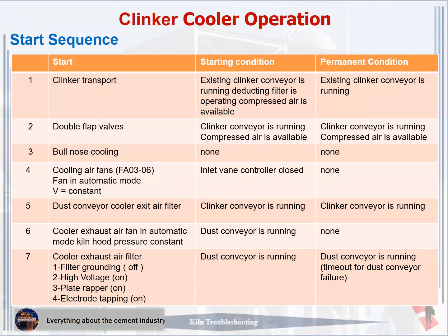Step 7: Start cooler exhaust air filter. One, filter grounding off; two, high voltage on; three, plate rapper on; four, electrode tapping on. Starting condition: dust conveyor is running. Permanent condition: dust conveyor is running. Time out for dust conveyor failure.